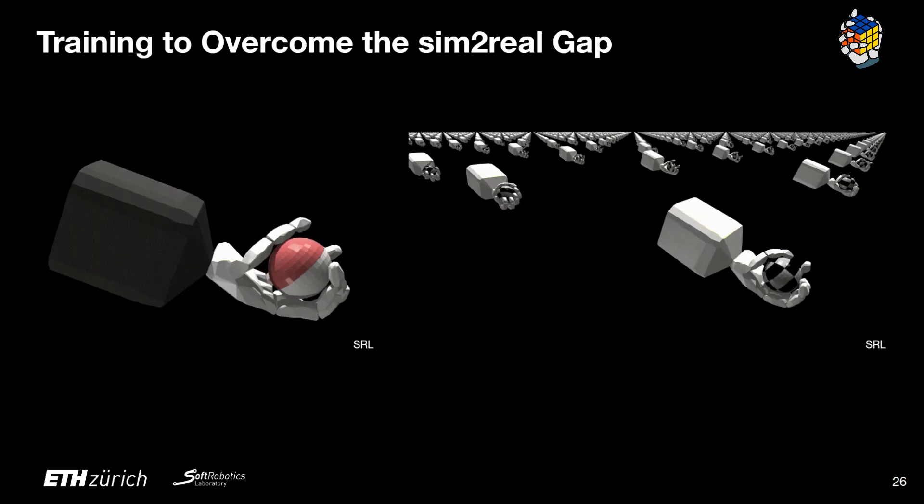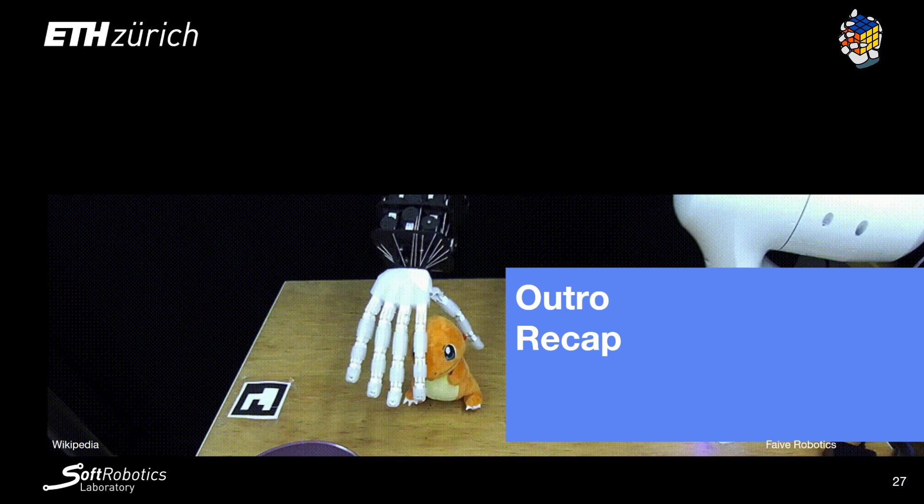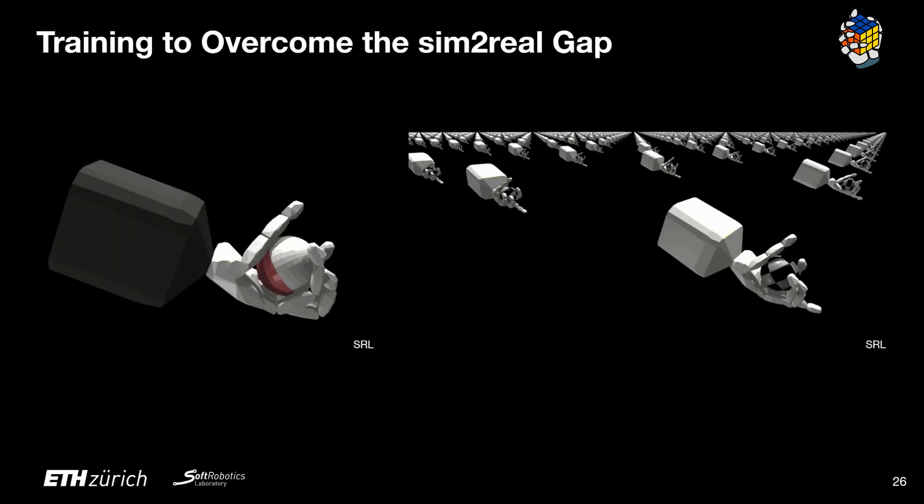Another solution consists in adding domain randomization to the model. In this method the parameters of the model such as mass and inertia are perturbed, and noise is added to the observations to resemble the actual measurements. You can see on the right of the slide how we are simulating a large number of hands. Each one is slightly different from the other due to this domain randomization in the parameters.